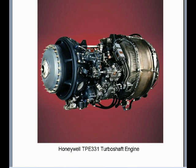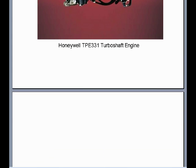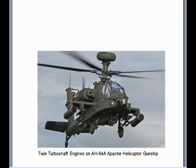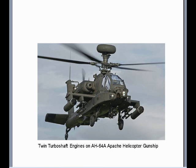Here's an example of a Honeywell TPE-331 turboshaft engine with a high power-to-weight ratio — quite small but with relatively high shaft horsepower output for its size. Here would be a turboshaft engine on a helicopter. Notice that the exhaust nozzle is convergent, so you get some jet thrust out of it, but it's mostly set up for shaft horsepower to drive a rotor. Here's the same example on an AH-64A Apache helicopter gunship, which has two turboshaft engines with a convergent exhaust nozzle for a little more thrust, used for shaft horsepower via gas turbine engine core.